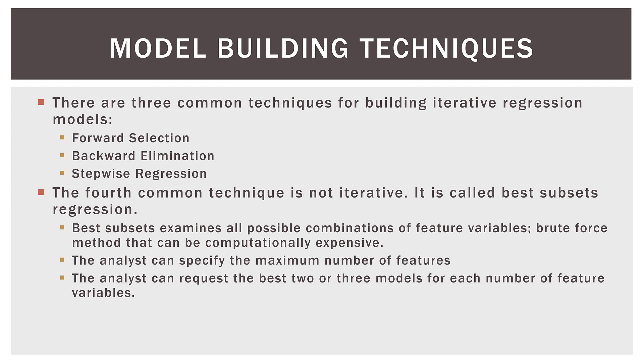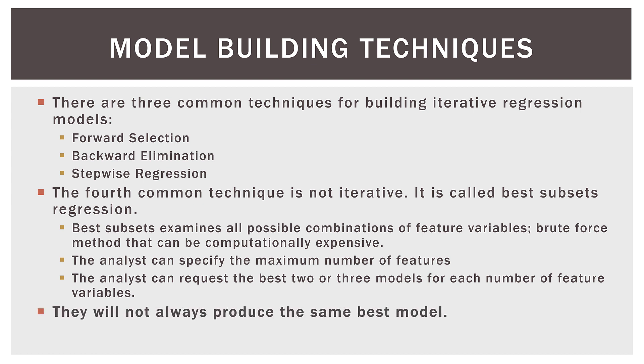The analyst can request the best two or three models for each number of feature variables — so the top three two-variable models, the top three three-variable models, and so on. But we'll talk about that more in the next video. Now, these methods will not always produce the same best model. And actually in best subsets, you will have competing metrics as to which one is the best model. Keep in mind, these may not all arrive at the same model.